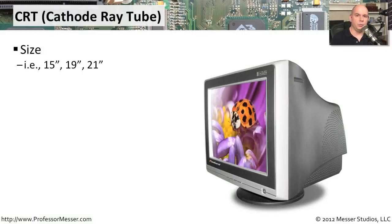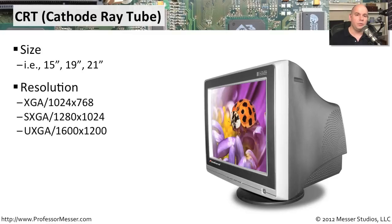The old style CRT is one that used a fluorescent tube and electrons to paint the screen one line at a time. These particular heavy monitors were configured for certain sizes, so you might get a 15 inch, 19 inch, 21 inch, or different other types of options for these big cathode ray tubes. Obviously, the larger the screen, the larger the tube, and the larger the weight for these devices. They usually came with a standard set of resolutions that it would support.